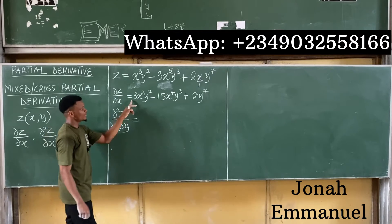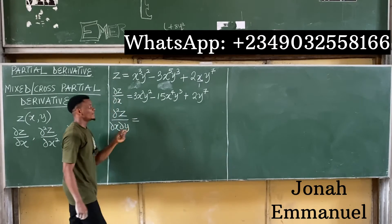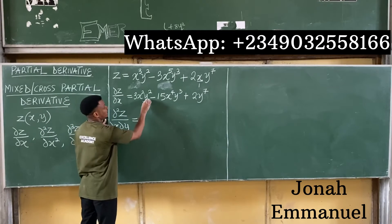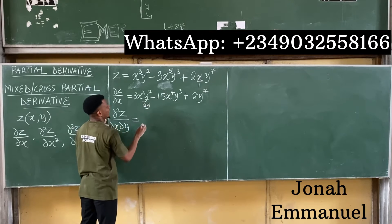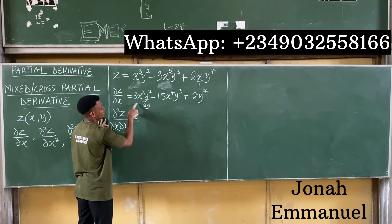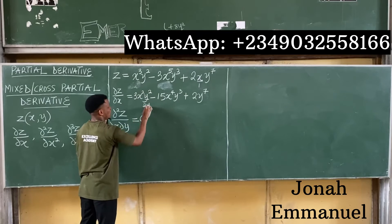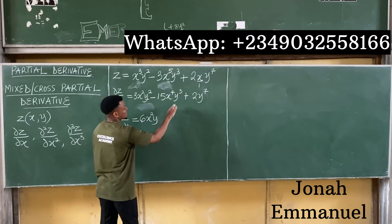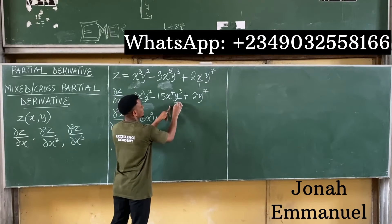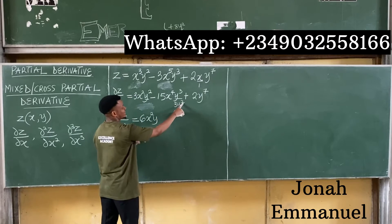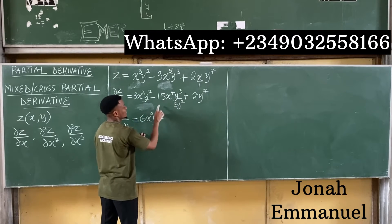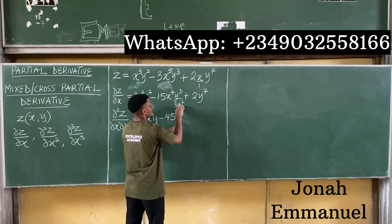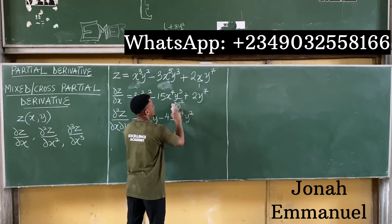For this second differentiation, my focus is now on y. Differentiating y squared gives 2y, and multiplying gives 3 times 2 equals 6x²y. Then differentiating y cubed gives 3y squared; 15 times 3 is 45, giving minus 45x⁴y².